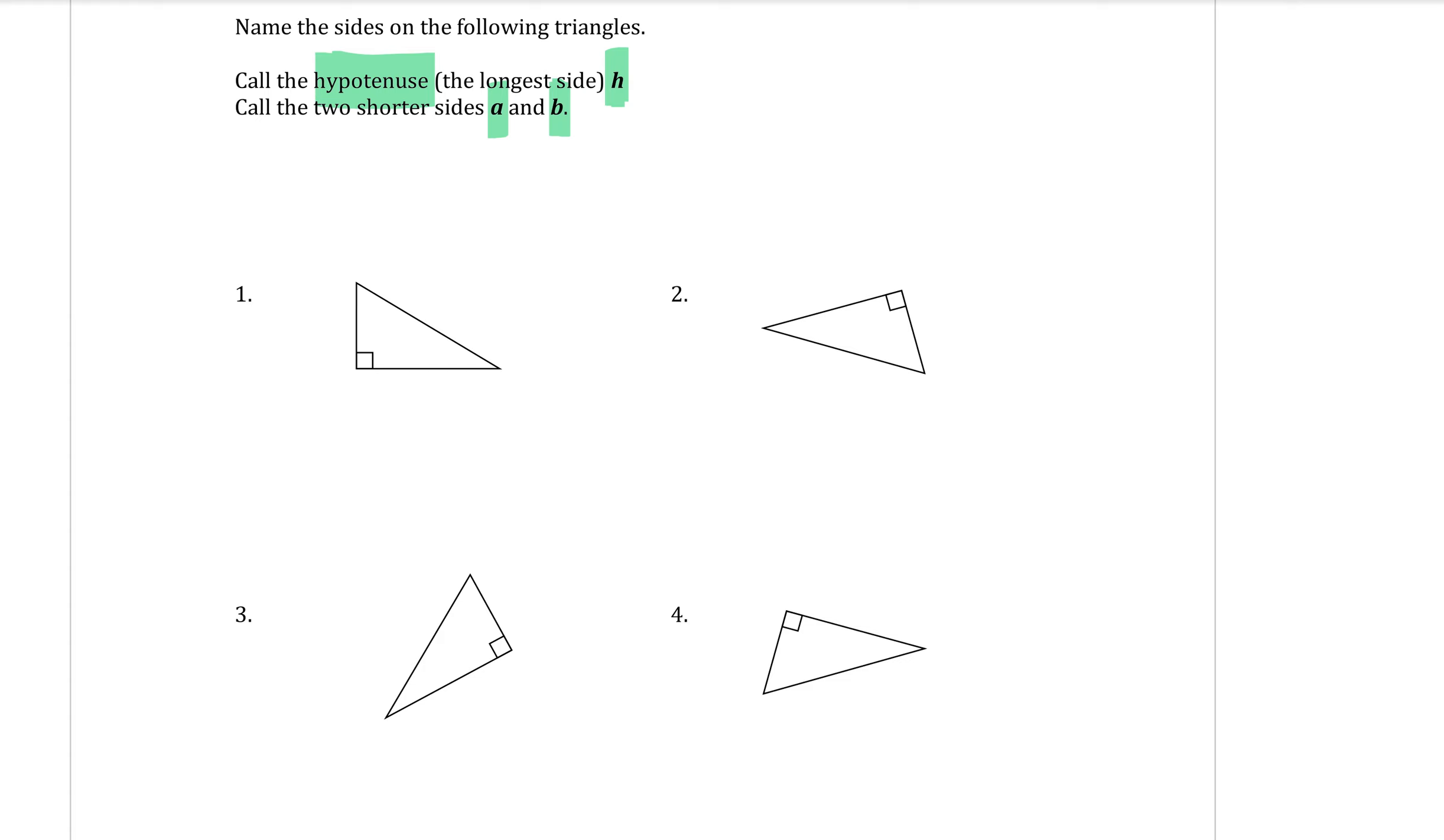So whenever you see a triangle, you always look for the right angle first. The sides on either side of the right angle are going to be the two arms. They're going to be a and b. It doesn't actually matter which one is which. The one straight across from the right angle is always the longer side, which is called the hypotenuse.